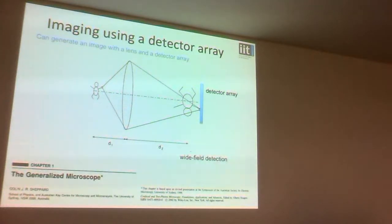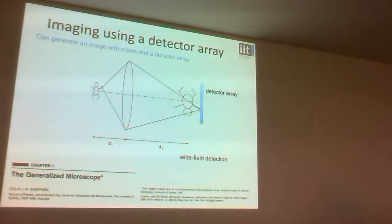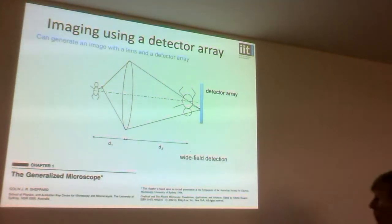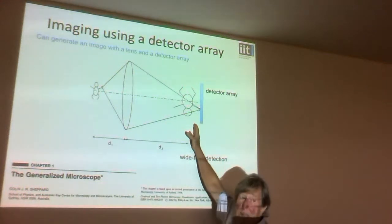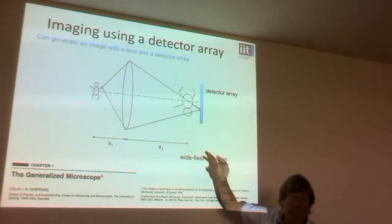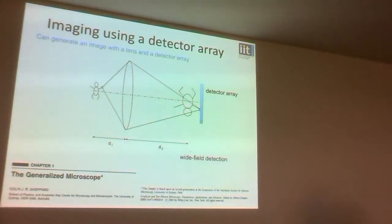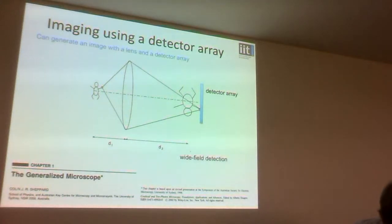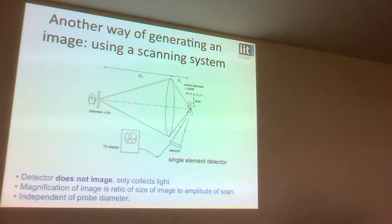Nobody uses eyepieces very much anymore. What we normally do nowadays is have a camera which records the image. This is showing how you can form an image of some object. We form a magnified image of the object on some detector array, which might be a CCD or something like this. So this is one way of making an image, but there is another way: using a scanned illumination spot.